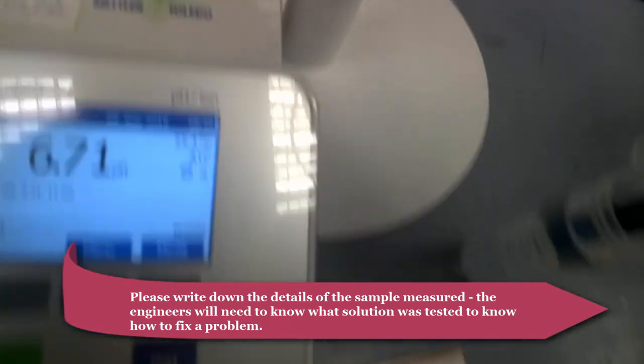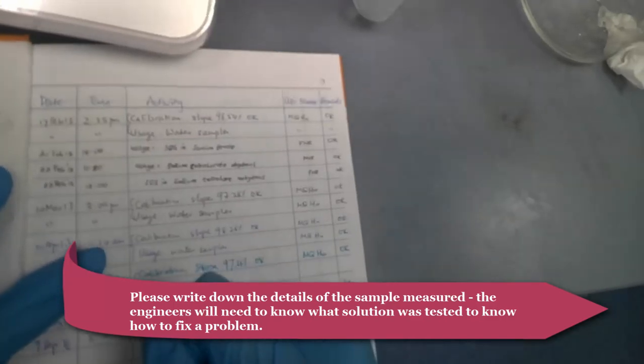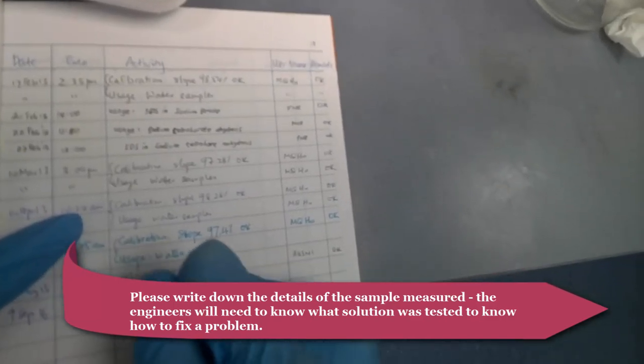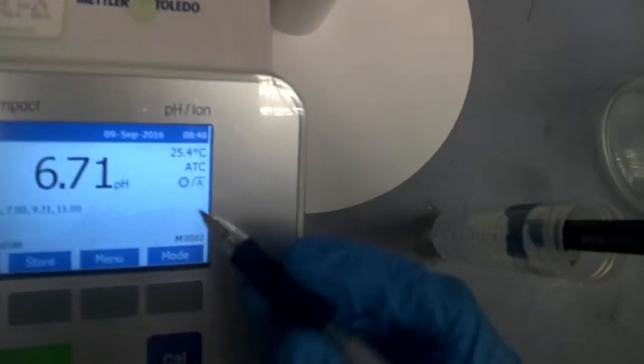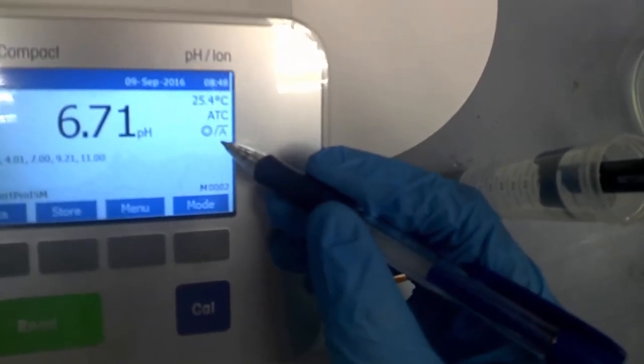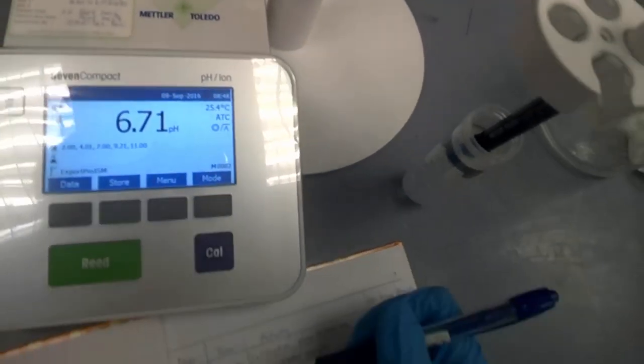Today's date is the 9th of September 2016. Time is 8:48 AM. This is calibration plus demonstration. I put video. Heard the sound just now? So that means now the reading is recorded. You see, it's not flashing anymore. pH of my unknown solution is 6.71. Good.